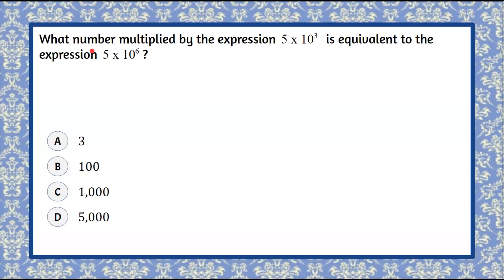So let's look at the parts to the question. We have what number multiplied by the expression 5 times 10 cubed equivalent to the expression 5 times 10 to the sixth. So now let's just look at what we highlighted. We're looking for what number, so that means this highlighted yellow is one of these values multiplied by this value equivalent to this value.